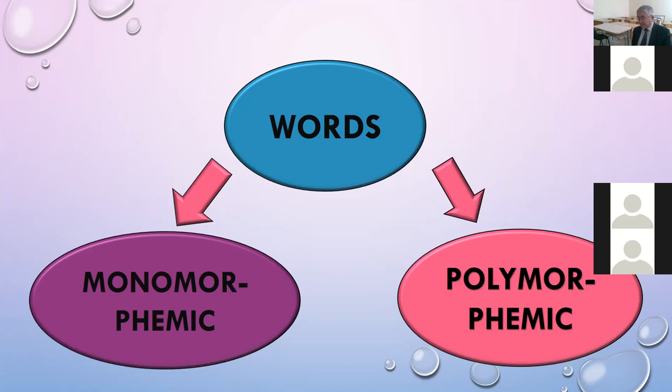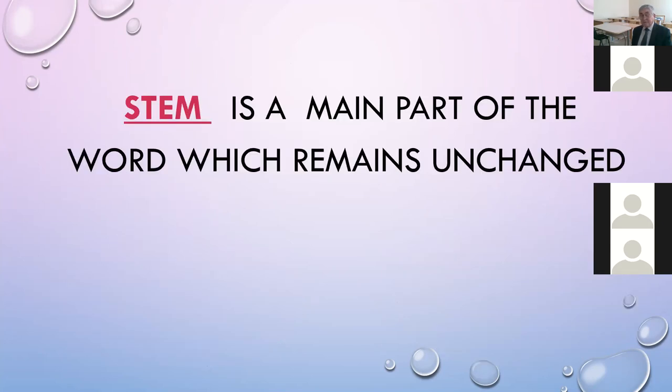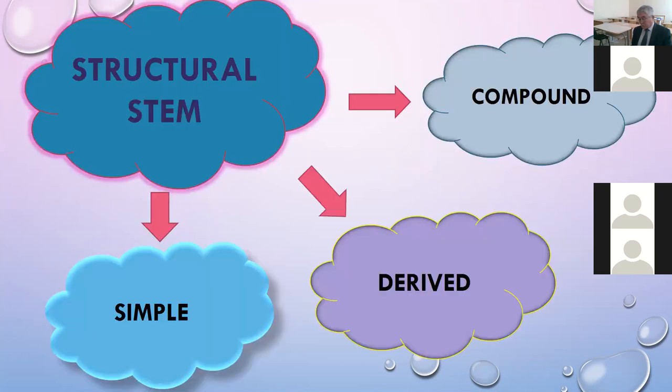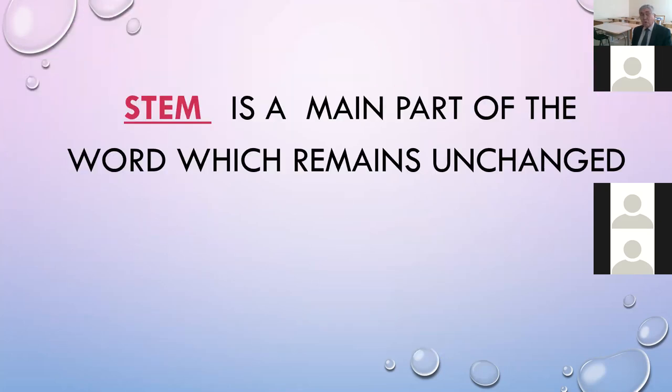The relations within the word and the interrelations between different types and classes of words are called derivational relations. The basic unit at the derivational level is a stem. The stem is a part of the word which remains unchanged through its paradigm. In the word forms talk, talks, talked, talking, we receive the stem talk.